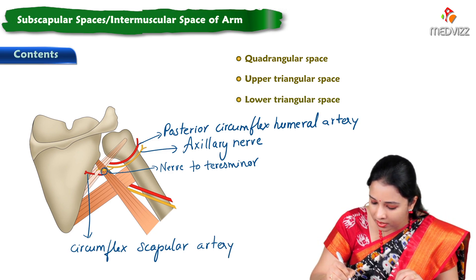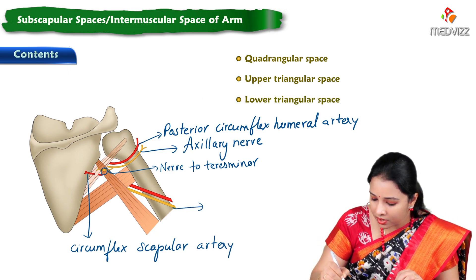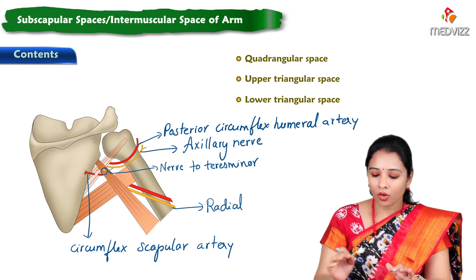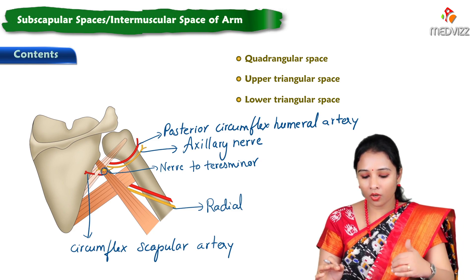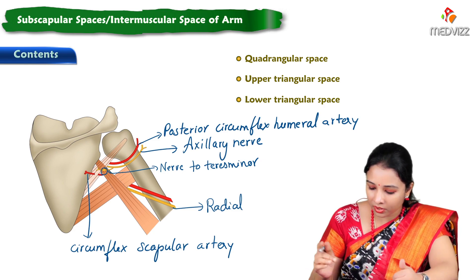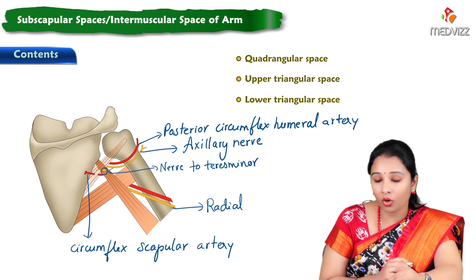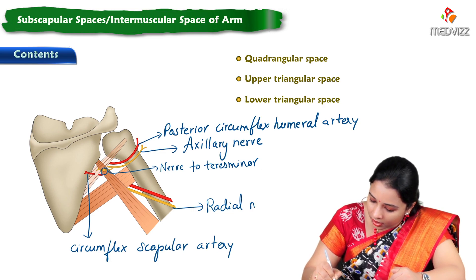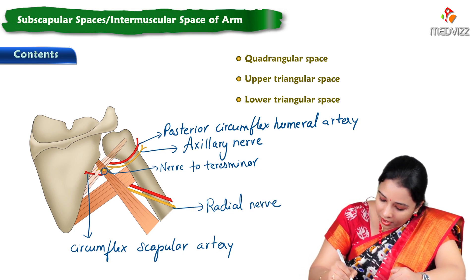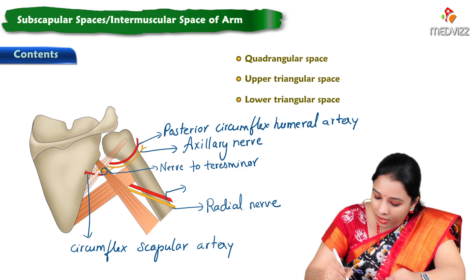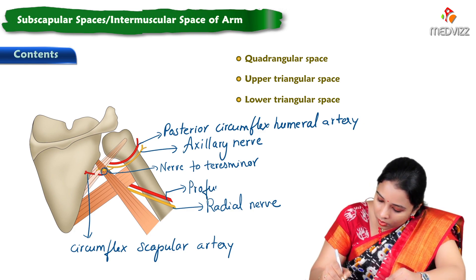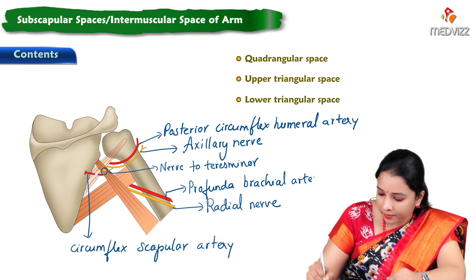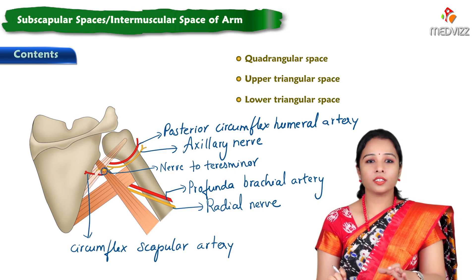The lower triangular space contains the radial nerve, a very thick nerve present along the spiral groove, or radial groove, along the shaft of the humerus. Here it is in direct contact with the shaft of the humerus within the radial groove. Along with the radial nerve, the deep branch of the brachial artery — called the profunda brachii artery — is also present. These are the contents in each space.